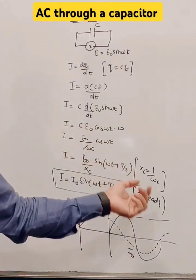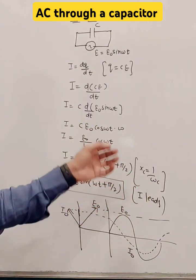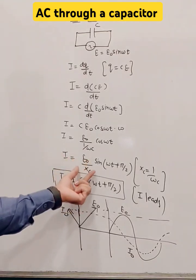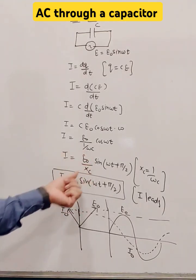1 by omega C is the capacitive reactance, or in other words, the resistance offered by the capacitor. So E naught by X, the value becomes I naught.